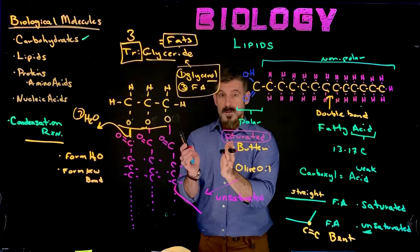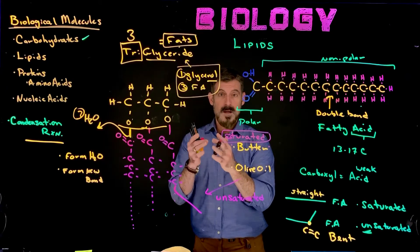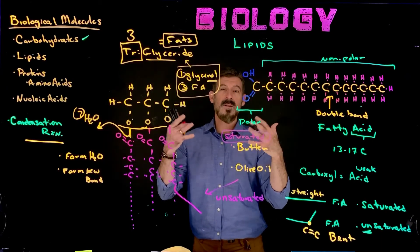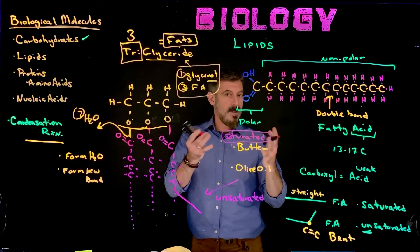So butter is composed of fatty acids that have a full complement of hydrogens, all three of them. And so they're very straight, and so they can be packed together really tight. And the tighter they can be packed together, the less movement there is between them. So the less fluid they are, the more solid they are. And so at room temperature, they stay solid.